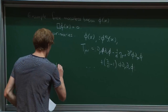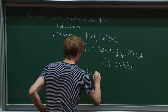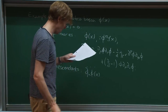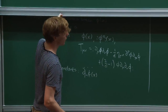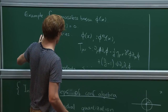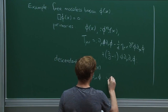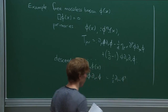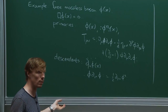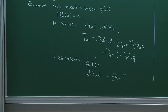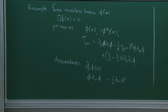Descendants are easy to generate: if phi(x) is a primary, then its derivative is a descendant. Sometimes it's not entirely obvious an operator is a descendant. For example, phi d_mu phi is the same as one-half d_mu(phi^2), and now you see it's a descendant. Given a general combination of phi's and derivatives, it's not easy to see whether it's a primary or a descendant — you have to see how everything fits in a representation of the conformal algebra.